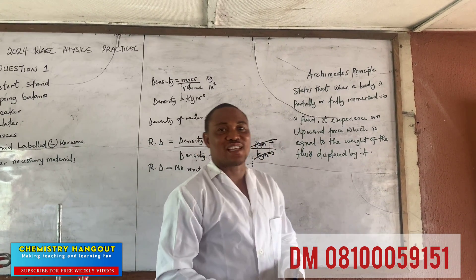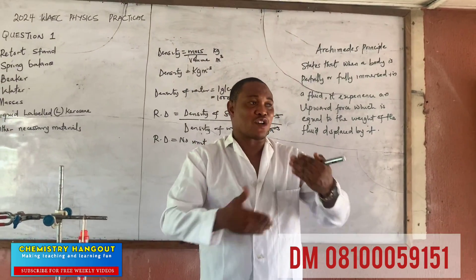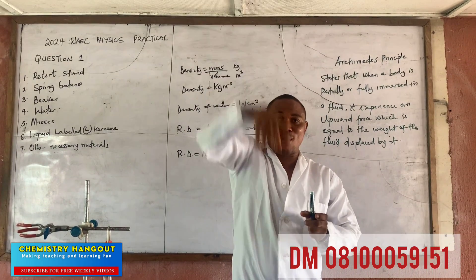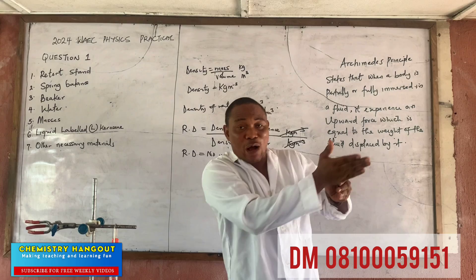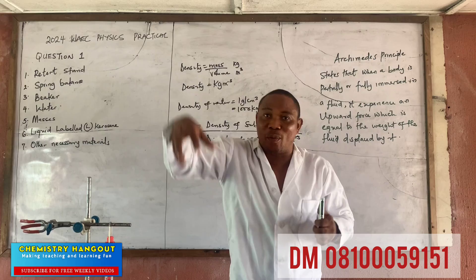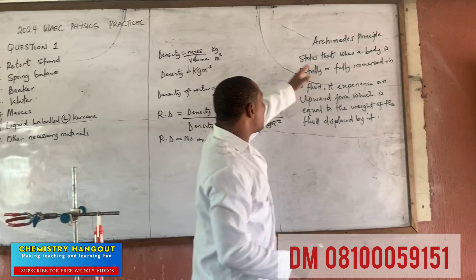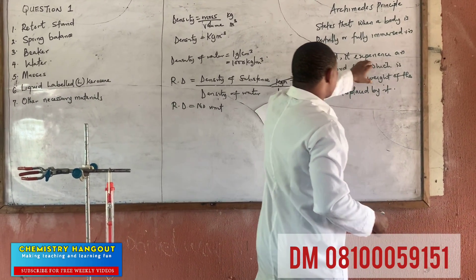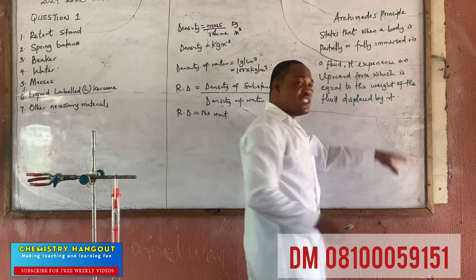In simple terms, what the principle is just saying is: when you immerse a body in water — for some of us that have seen this practical before, we use an overflow can — some water will be displaced, and the weight of the water displaced is equal to the weight of the object or body you have immersed. That's the meaning of what Archimedes is saying.